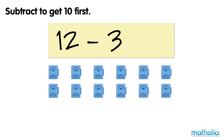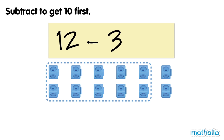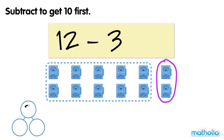Subtract to get 10 first. Find 12 minus 3. First, let's make a group of 10 cubes. To subtract to get 10 cubes, we need to subtract 2 cubes. We can write 3 as a number bond of 2 and 1.